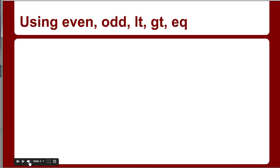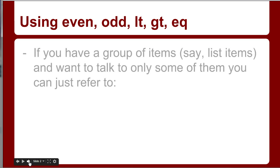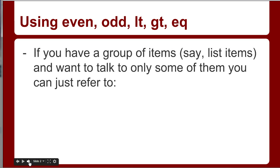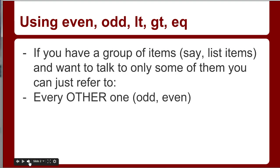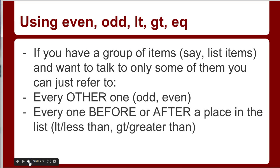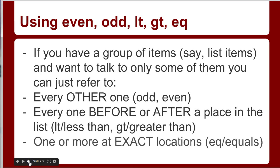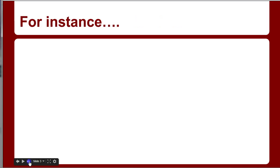One of the first things I want to talk about is using things like even, odd, less than, greater than, or equals to. If you've got a group of items like list items and you want to talk to only some of them, you can refer to every other one — odd or even — every one before or after a place in the list using less than or greater than, or one or more exact locations using equals. Here are some examples.